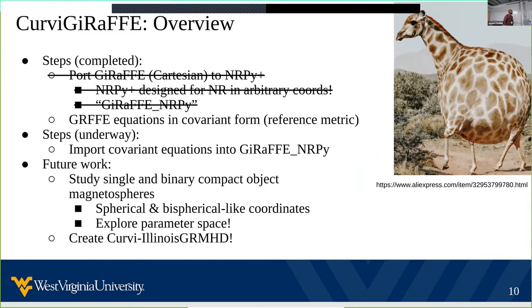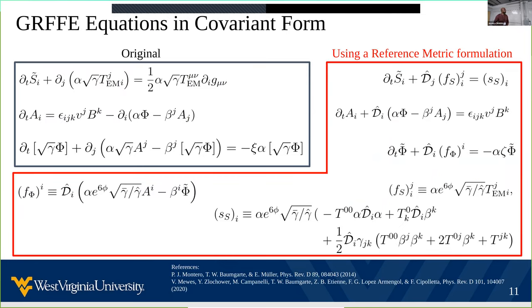Now that that's been completed, the next step towards developing Curvy Giraffe is making the equations covariant with respect to a reference metric, such that we can evolve these equations using curvilinear grids. In the top left box we have the original formulation as used by Giraffe NRPy and Giraffe, and in the red box we have our new formulation with respect to a reference metric. One of the key features is that we have partial derivatives that have now been converted into covariant derivatives.